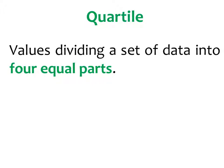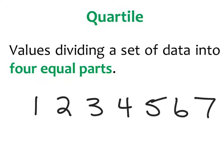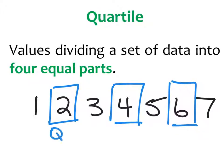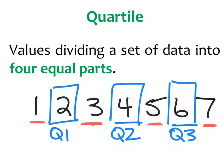Let's begin by focusing on the language of the discipline. A very important word when discussing measures of spread is quartile. A quartile is a value that divides a set of data into four equal parts. We'll be finding three quartiles. It's important to understand that quartiles divide data into four equal parts — sounds like quarters. Quartiles break my data into quarters.